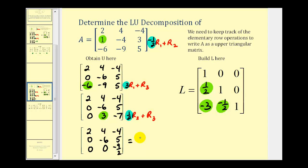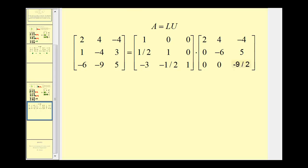Here's our upper triangular matrix U and our lower triangular matrix L for our LU decomposition. Putting the pieces together: A equals L times U, where A is the given matrix, L was the lower triangular matrix built using the shortcut, and U was the upper triangular matrix found by performing row operations. I hope you found this helpful.